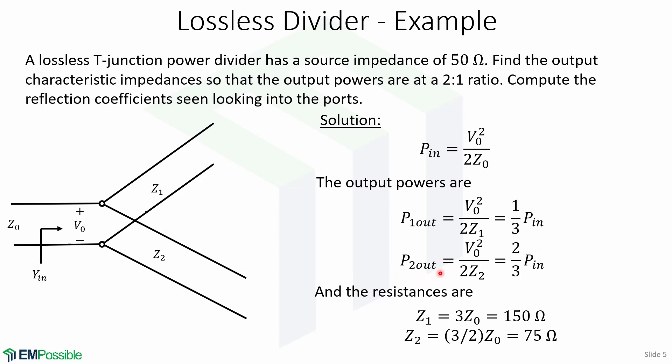And for P2 out, we have V0 squared over 2Z2, which is equal to 2 thirds of P in. Now, the resistances will be 150 ohms for Z1 and 75 ohms for Z2.